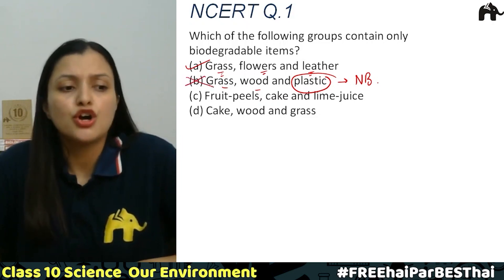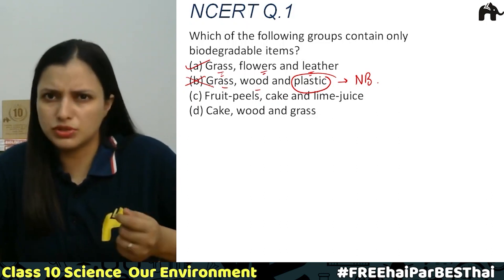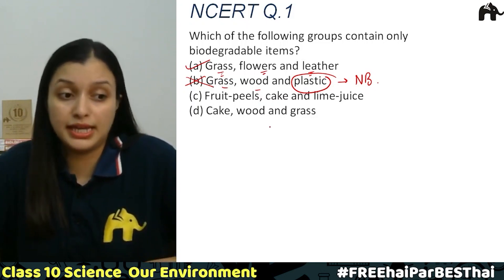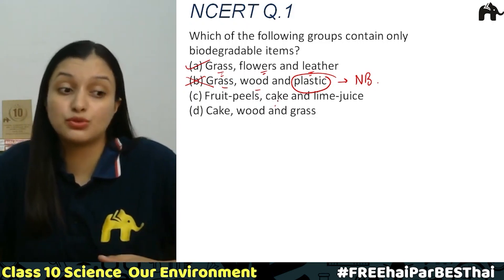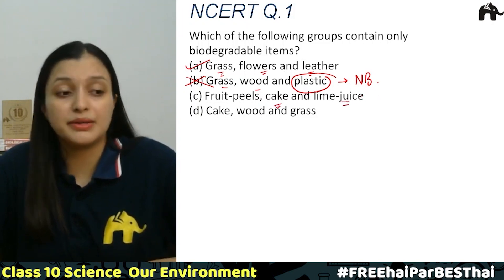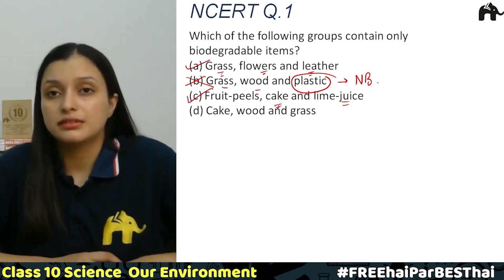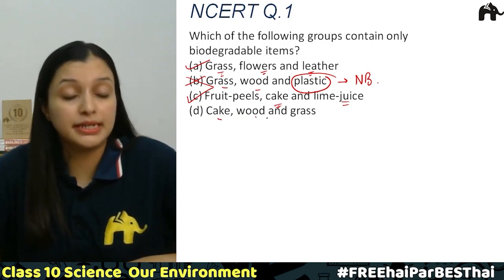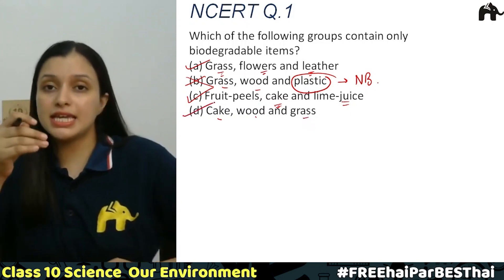C option: fruit peels, cake, and lime juice — fruit peels चाहे सब्ज़ी के हों या fruits के, ये सारे biodegradable होते हैं। Cake eatable है तो यह भी biodegradable है, और lime juice भी biodegradable है, so this is a correct option. Then D: cake, wood, and grass — cake, wood, and grass सभी biodegradable हैं। So A, C, and D — all three options are correct.